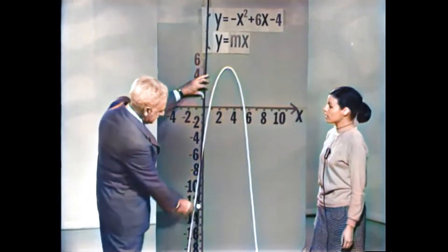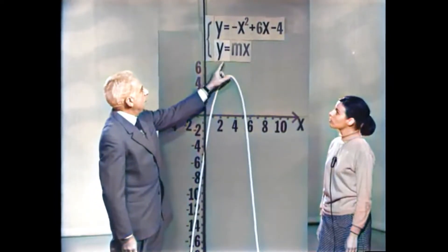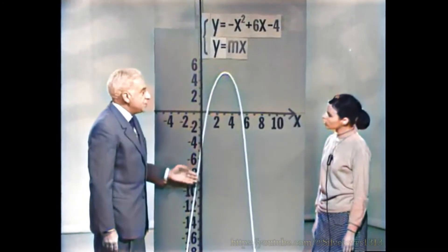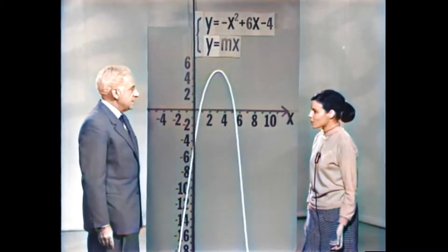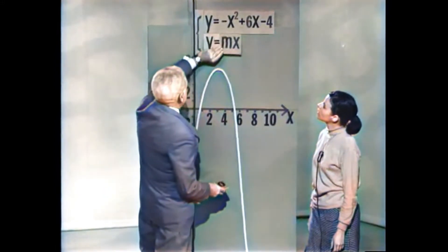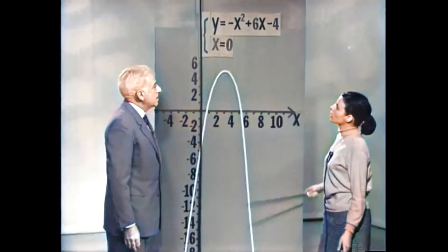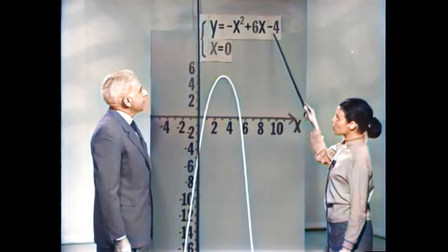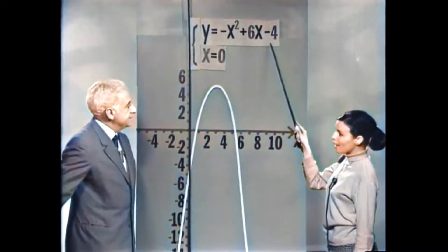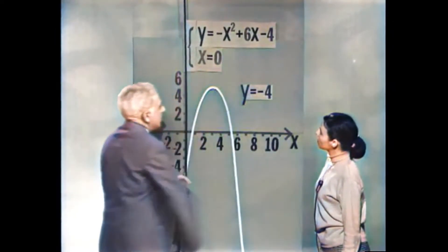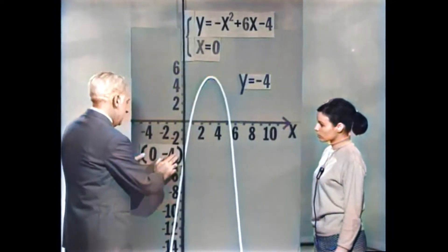כאשר הישר מתלכד עם ציר ה-y, אין לו שיפוע — הוא אינו מן הצורה y שווה ל-mx. המשוואה שלו היא x שווה 0. נציב 0 במקום x במשוואה הראשונה ונקבל y שווה מינוס 4. ולכן יש פתרון אחד — נקודת חיתוך אחת: (0, מינוס 4).